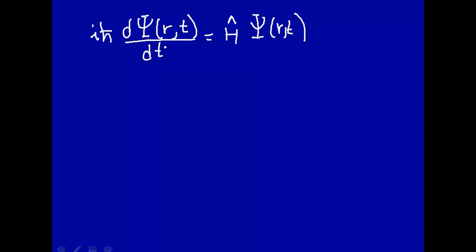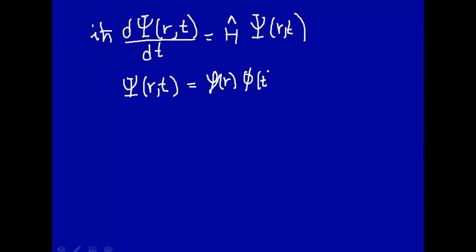That's what we're going to focus on in this course. If we want to study more about the time dependence, we can take a more advanced physical chemistry course. What we do here is a technique that will be common: separating variables. We have the wave function as a function of two variables, and we're going to separate those into a function of just the position and then a function of just time. That's valid as long as position and time are not correlated.